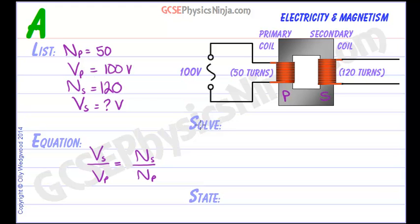Let's put some numbers in by solving the equation. We have VS, what we're looking for, divided by VP, that's 100, equals NS, that's 120, divided by NP, which is 50.